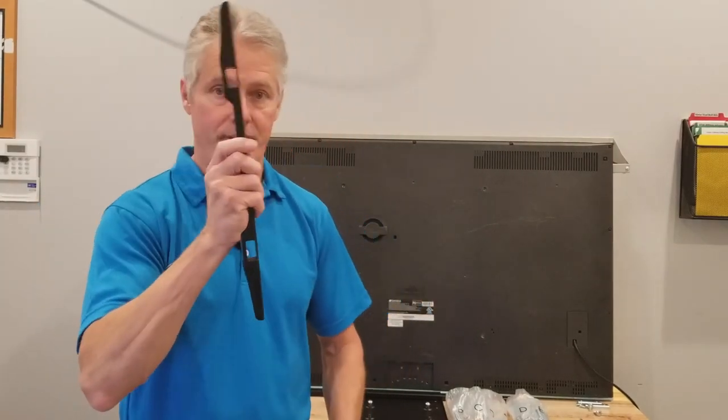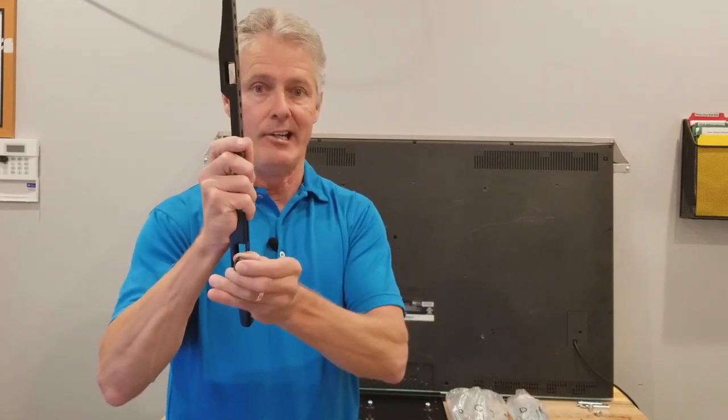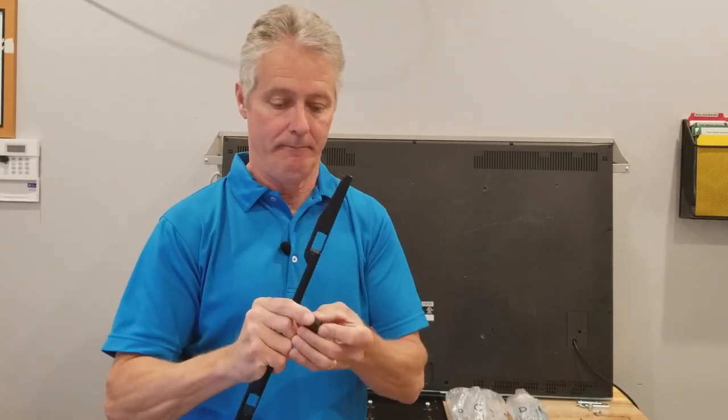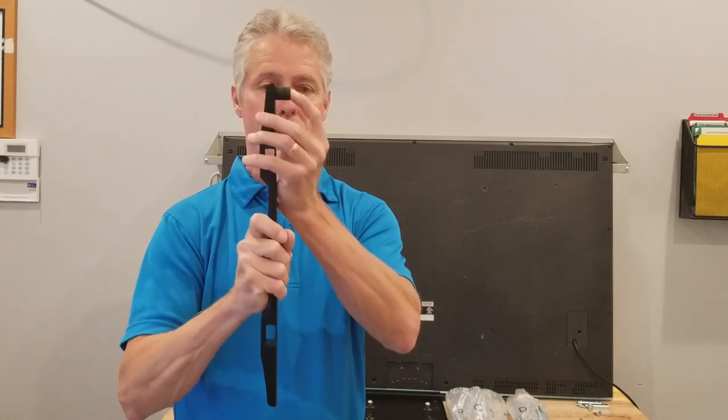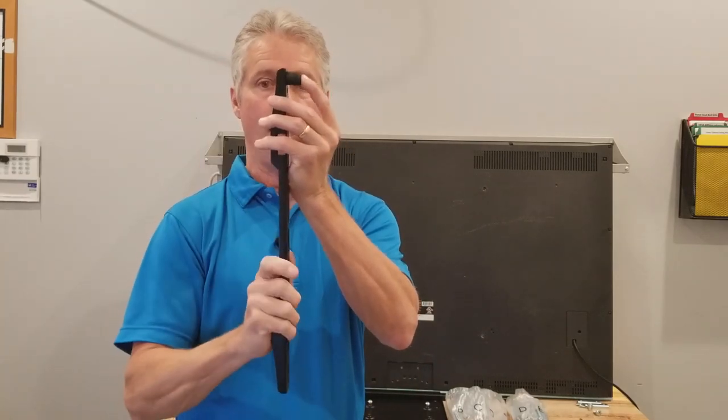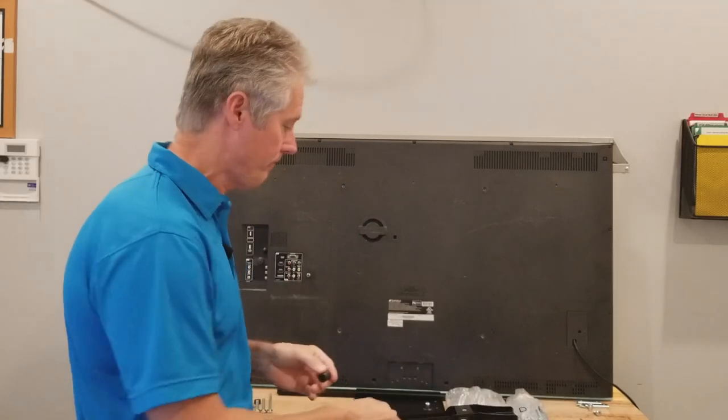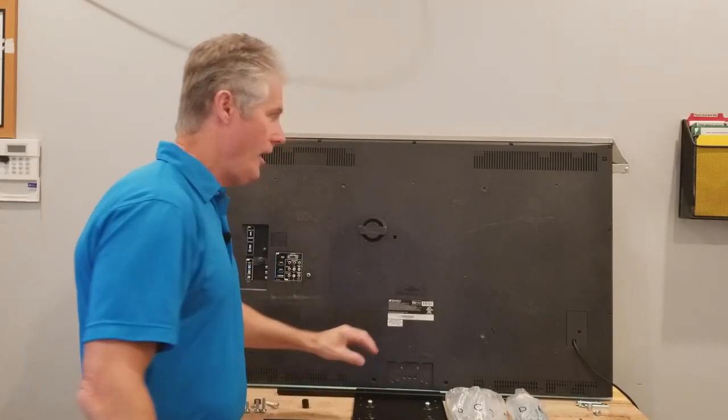When your vertical rail is up against your TV and you're thicker down here, we may have to put spacers into the top to keep our vertical rail square with the back of the TV.